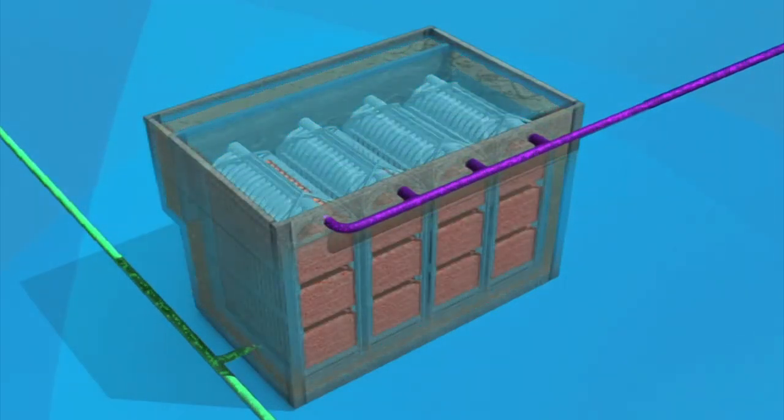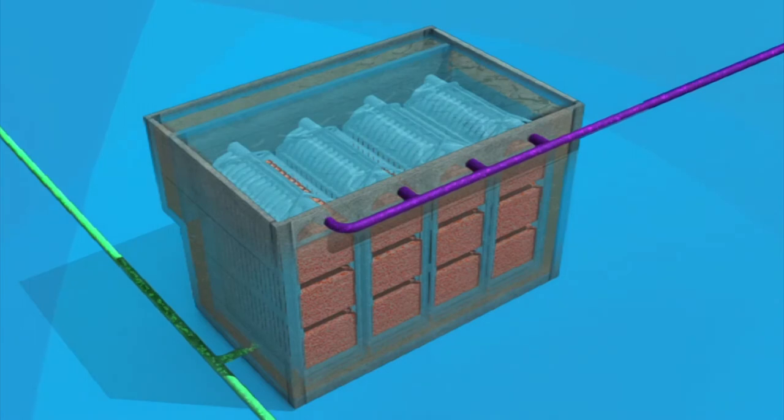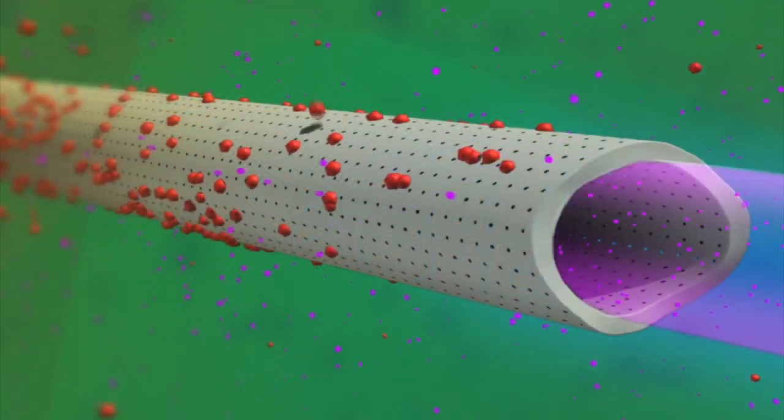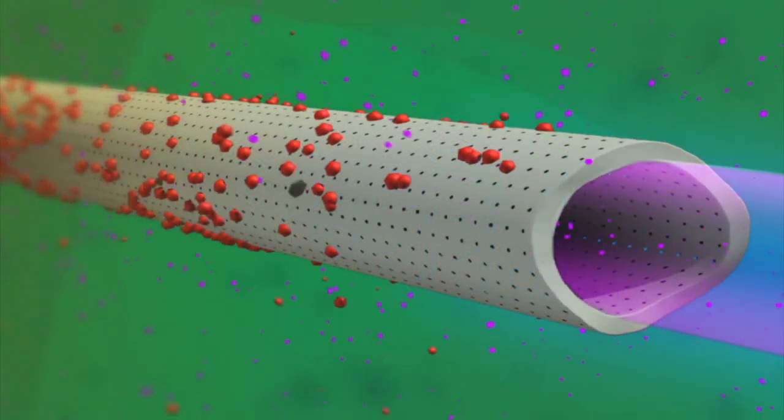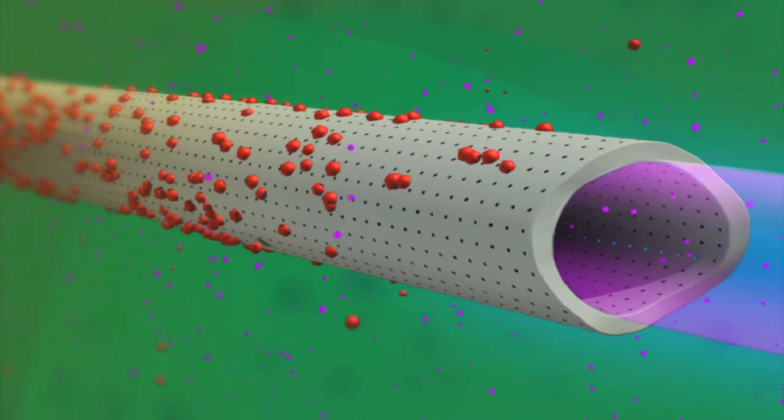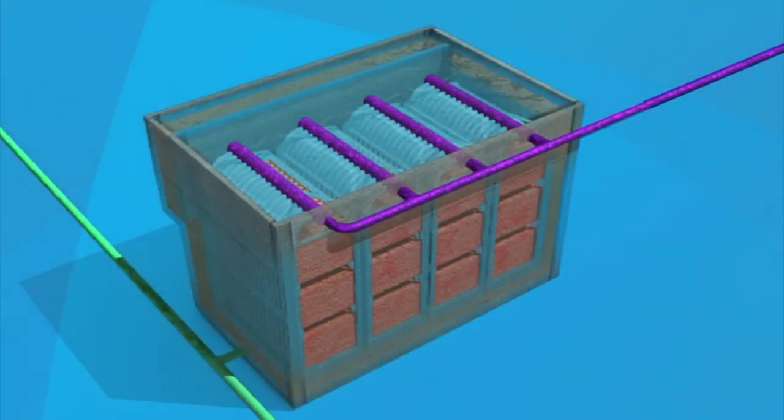After a period of operation, the fibers become blocked by the retained particles. This restricts the flow of water. The fibers are cleaned through cycles of backwashing and chemical cleaning.